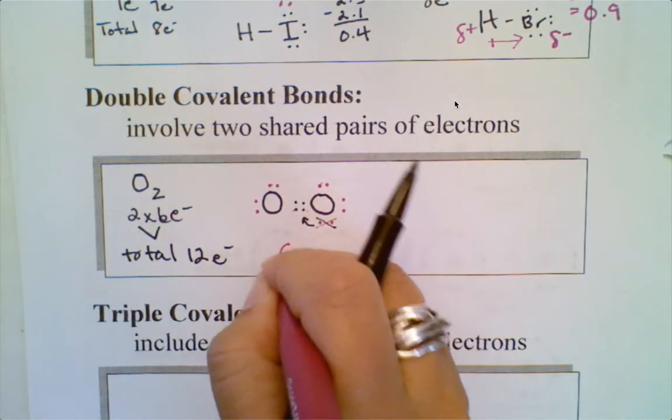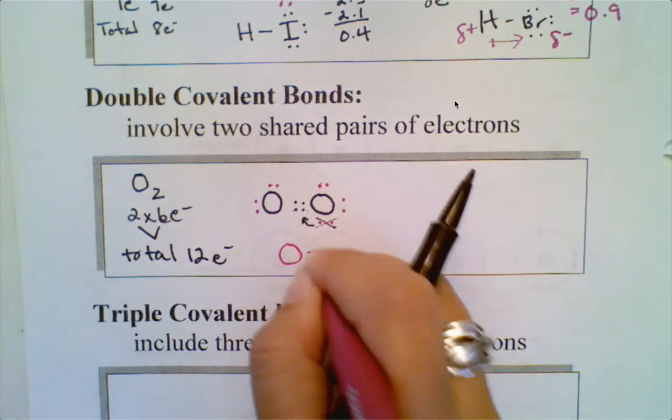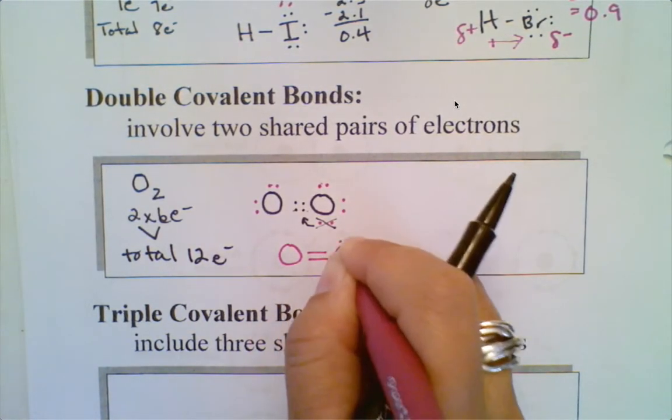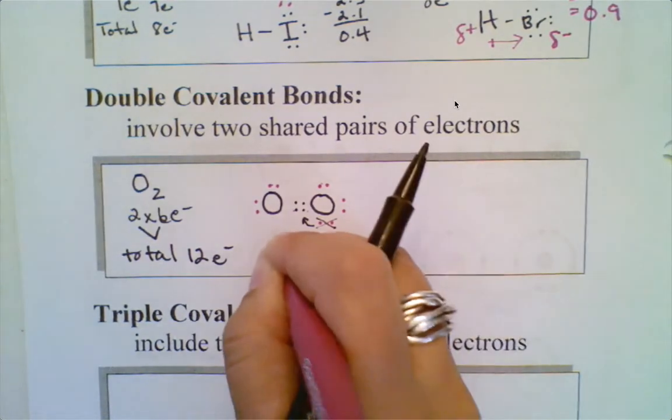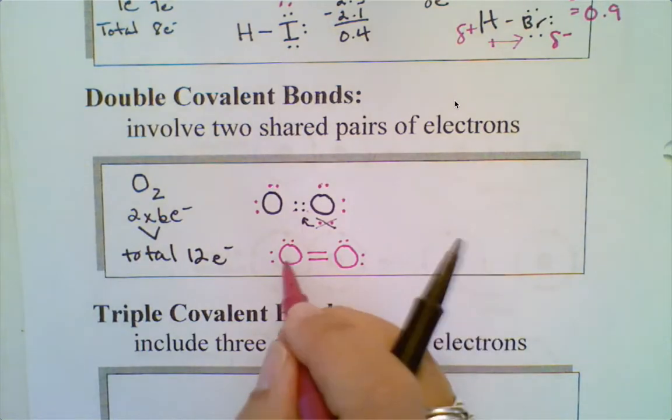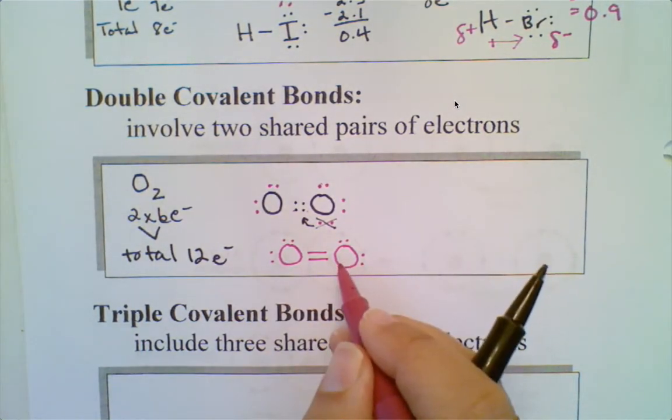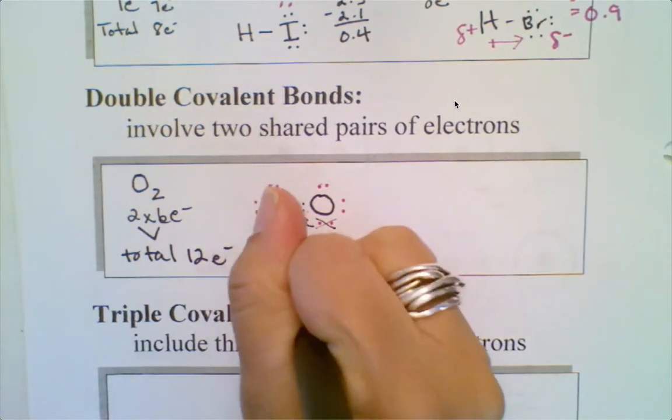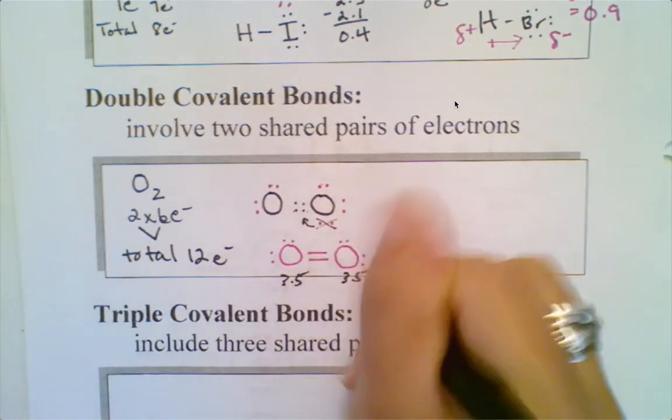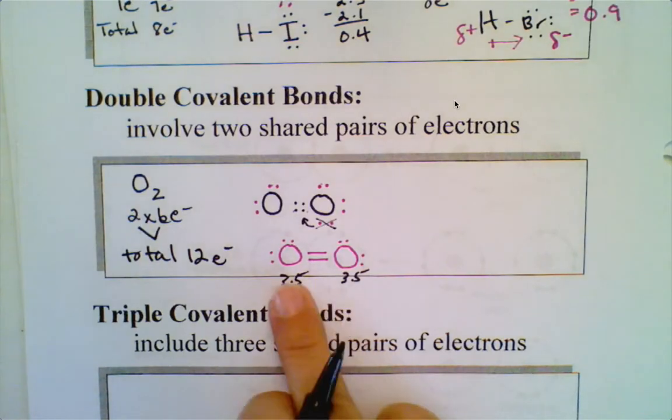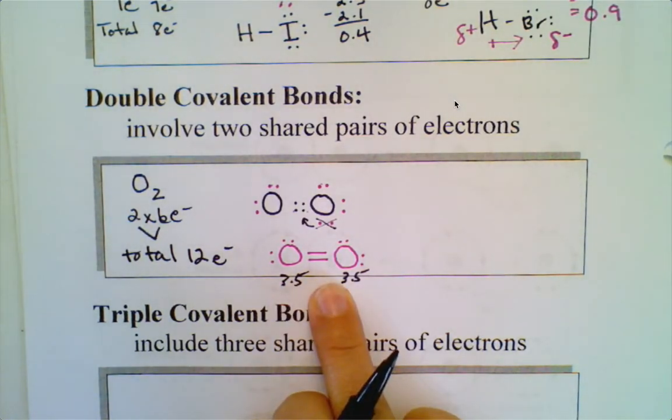When we clean that up using our structural diagram, I use a double bond like so and I leave my lone pairs to indicate that the octets have been fulfilled. Because these are two of the same atom and oxygen has an electronegativity value of 3.5 and 3.5, when I subtract that value it's a zero, they're going to be sharing those equally. So this would be considered to be a non-polar covalent bond.